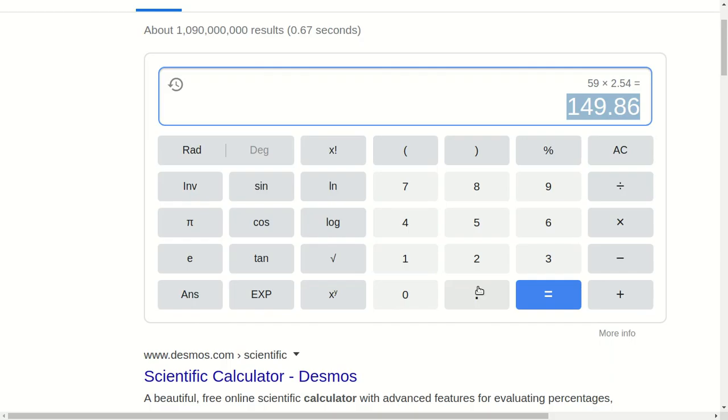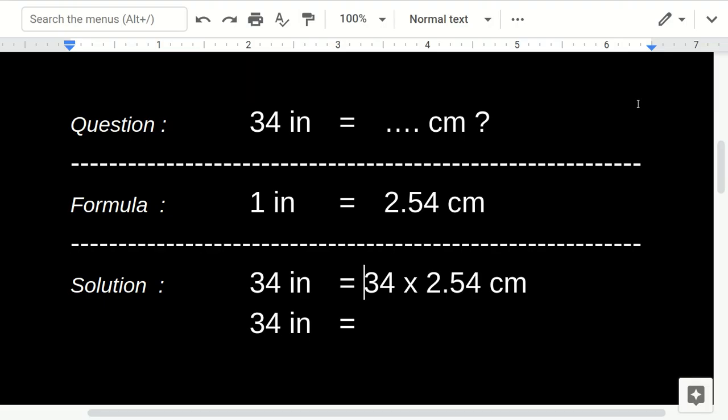Let's multiply this. 34 times 2.54 equals 86.36.